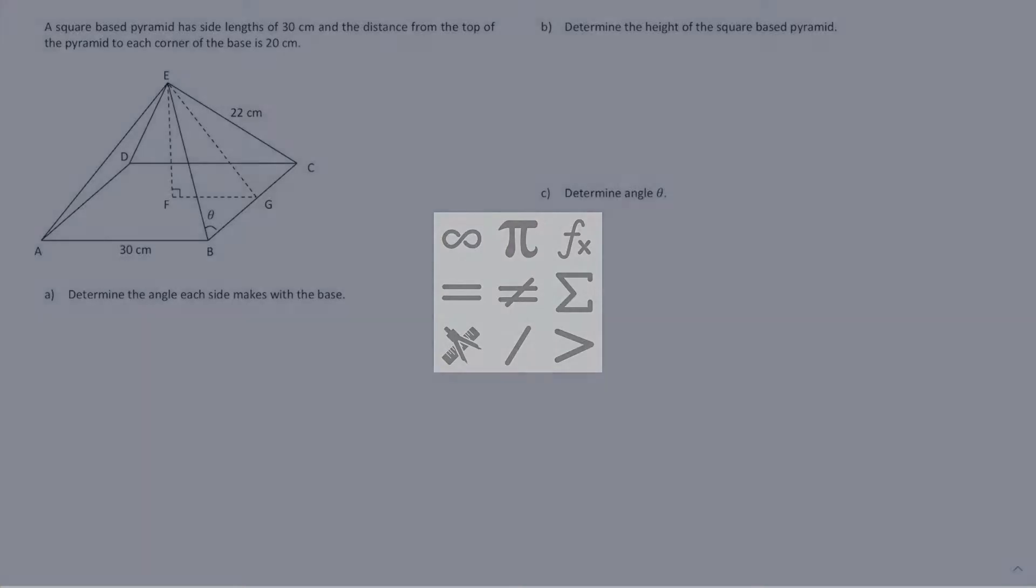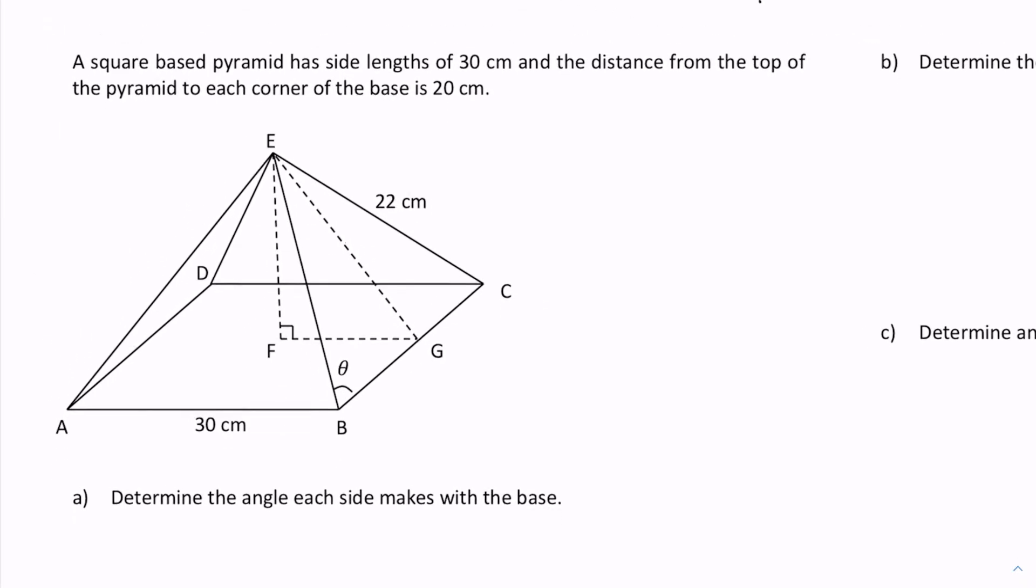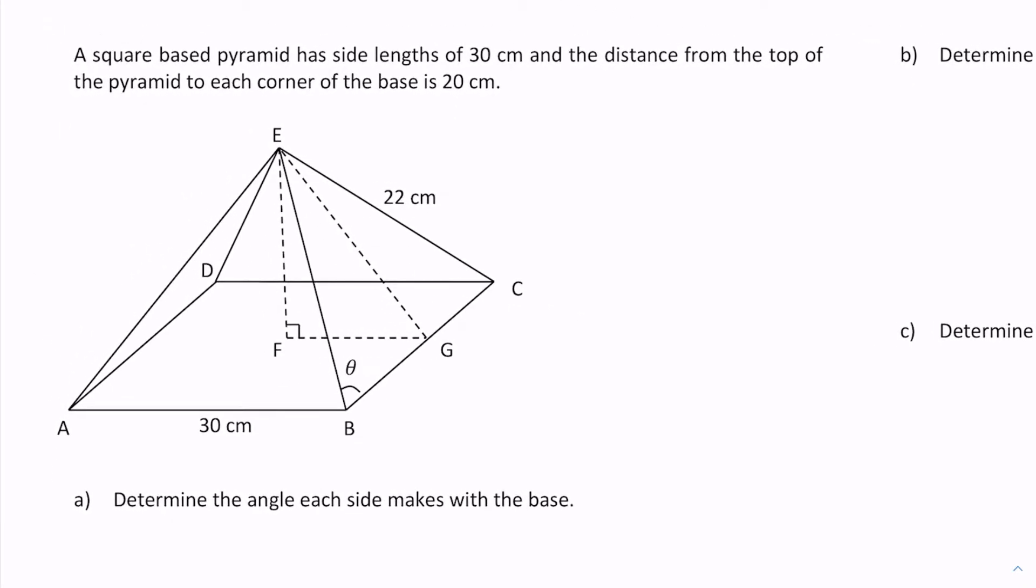In this word problem, we're looking at a triangular pyramid with a square base. The base of the pyramid has sides that are 30 centimeters in length, so all the way around—this, this, this, and this—these are all 30 centimeters.